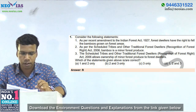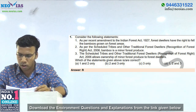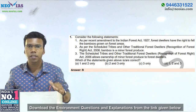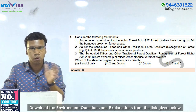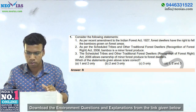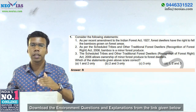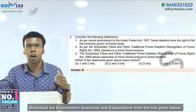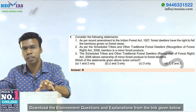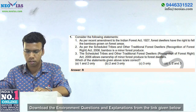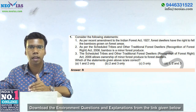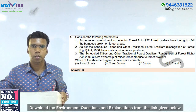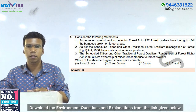Consider the following statements. First statement: as per recent amendment to the Indian Forest Act 1927, forest dealers have the right to fell the bamboos grown on forest areas. This was in current affairs — bamboo was excluded from the definition of tree under the Indian Forest Act 1927. Bamboo was included in the tree definition under this act and was having protection, but in order to improve the livelihoods of forest dwelling peoples, the definition of tree was removed — but only from non-forested areas, not from forest areas.